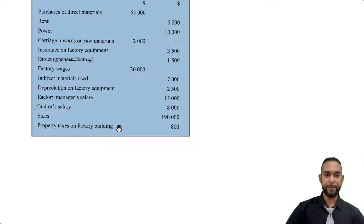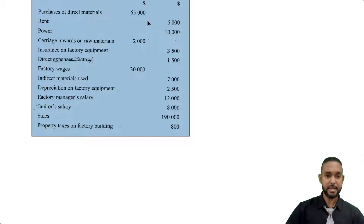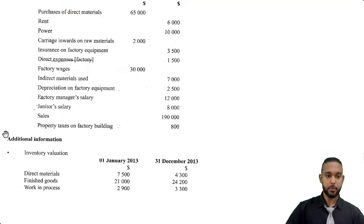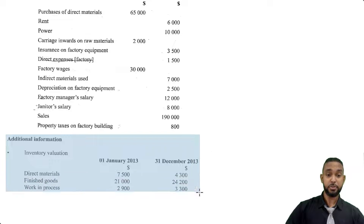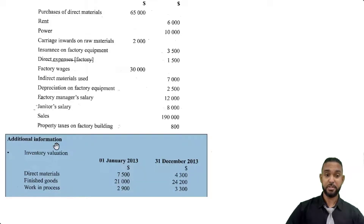Now I'm not entirely sure why they have two columns making it look like a trial balance with debit and credit items — everything here is a debit item. In any case, let's take a look at the additional information. Always be sure to read all of your information, especially the additional information, because that's going to give you important details to help you do the question.